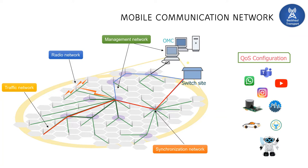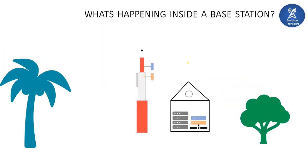We are going to study about the traffic network. Before starting on the traffic network, let's see what is happening in the base station. If you look at the base station, you can see two different types of antennas — one is a rectangular antenna and another one is a parabolic antenna. Through the rectangular antenna, the user can communicate with the base station.